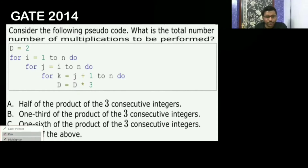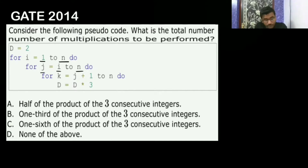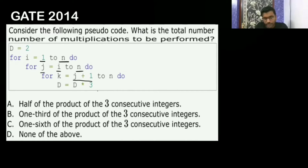So what is it doing here? It is first calling f(1 to n). For i equal to 1 to n, the dimension is two-dimensional. Then j is going to run from i to n, and k is going to run from j+1 to n. And it is doing one multiplication.